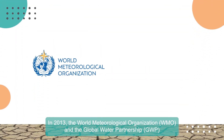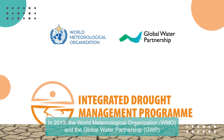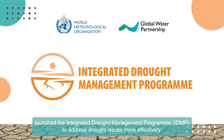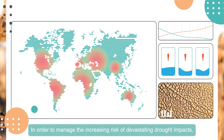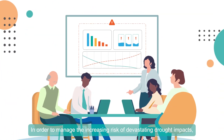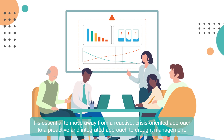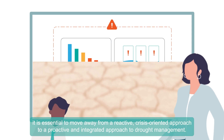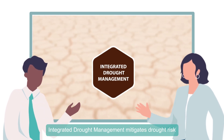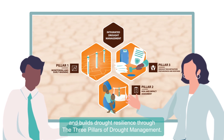In 2013, the World Meteorological Organization and the Global Water Partnership launched the Integrated Drought Management Program to address drought issues more effectively. In order to manage the increasing risk of devastating drought impacts, it is essential to move away from a reactive, crisis-oriented approach to a proactive and integrated approach to drought management. Integrated Drought Management mitigates drought risk and builds drought resilience through the three pillars of drought management.